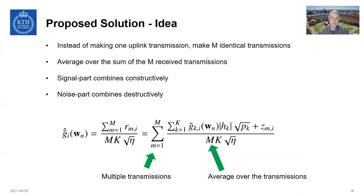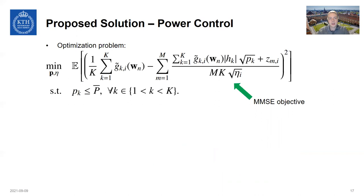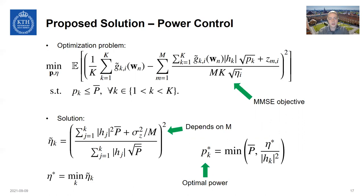This idea is a very simple idea, but it's the first step in this direction. And together with that idea, we've also solved the adapted power control problem. So similarly to what we saw in the state of the art, we're trying to minimize the mean squared error between the desired function that we want to compute and what we actually receive at the server. And we found a closed form solution for this power control problem. And an interesting thing to mention here is that the solution depends on M. So it's important to know the number of retransmissions before you start actually transmitting in order to select the right powers.